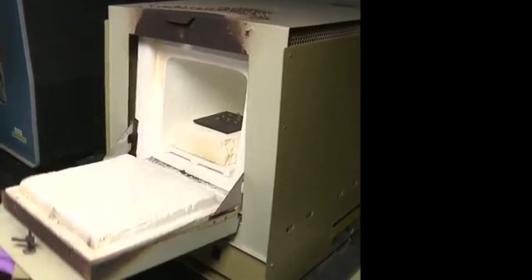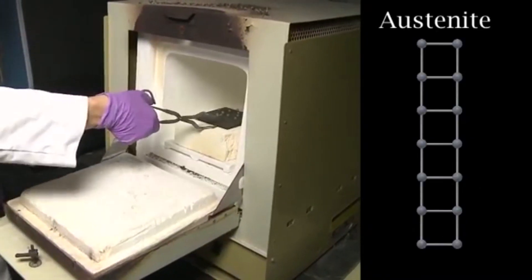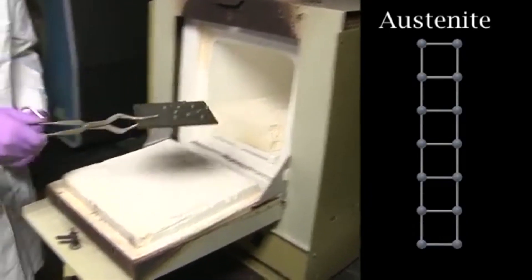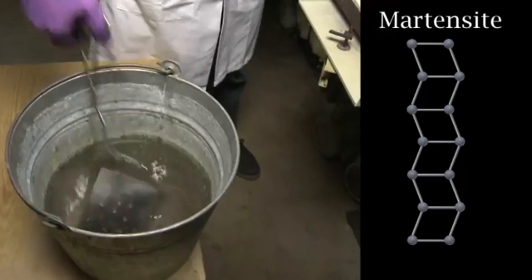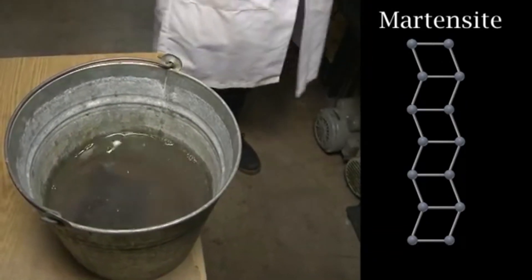Inside the furnace, the wire transforms into austenite, which sets the memory shape. When we cool down, it transforms into martensite, but it does so without changing the shape.